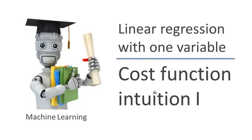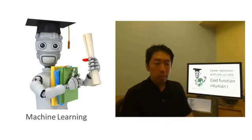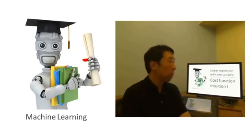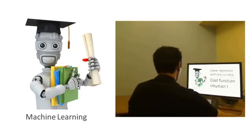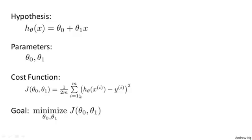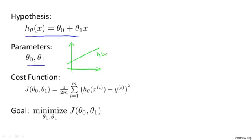In the previous video, we gave a mathematical definition of the cost function. In this video, let's look at some examples to get better intuition about what the cost function is doing and why we want to use it. To recap, we want to fit a straight line to our data, with a hypothesis parameterized by theta_0 and theta_1. With different choices of the parameters, we get different straight line fits, and there's a cost function that was our optimization objective.